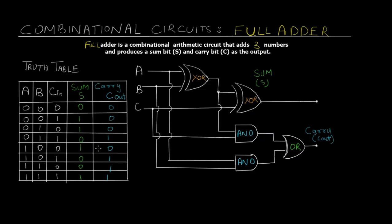What you can see on the screen is a logic diagram for a full adder. What we'll do is first try to derive the sum and carry expressions and then validate that with the truth table as shown. The truth table is for binary addition of three numbers. We've also discussed binary addition in a different video, so I'll link that in the description of this video as well.